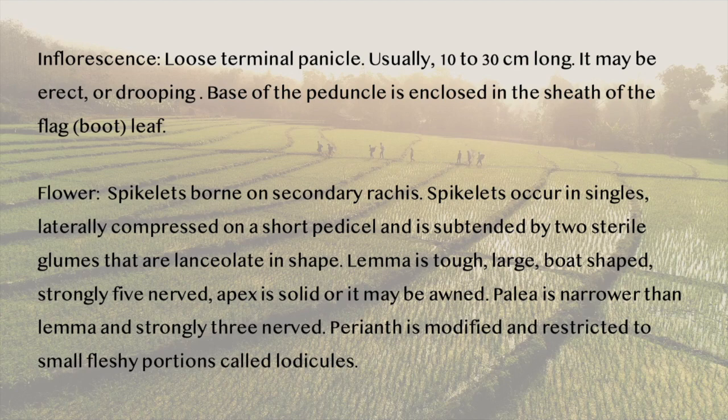The spikelets are borne on the secondary rachises. They occur in singles. They are laterally compressed on a short pedicel and subtended by two sterile glumes which are lanceolate in shape. The lemma is tough, large, boat-shaped and strongly five-nerved. The apex is solid or armed. The palea is narrower than the lemma and is strongly three-nerved. The perianth is modified and restricted to small fleshy portions called lodicules.